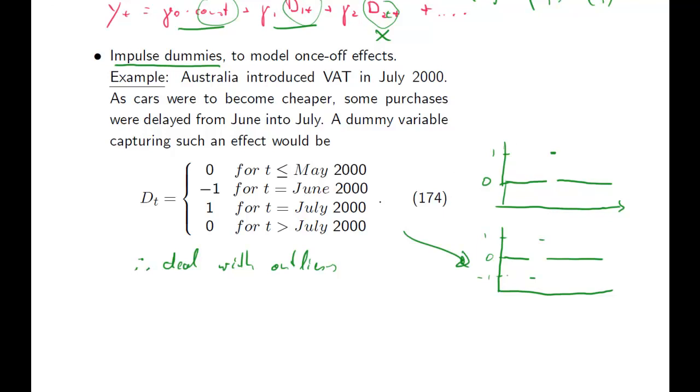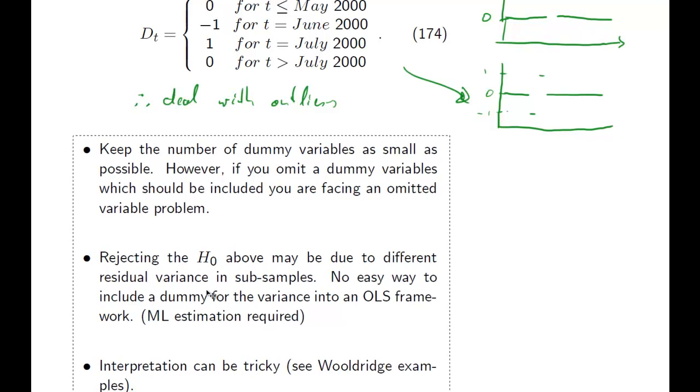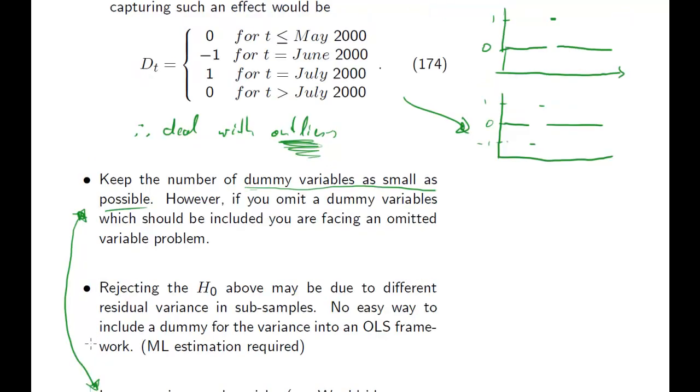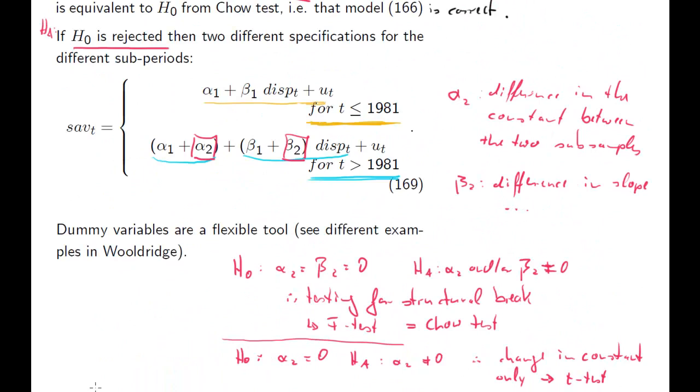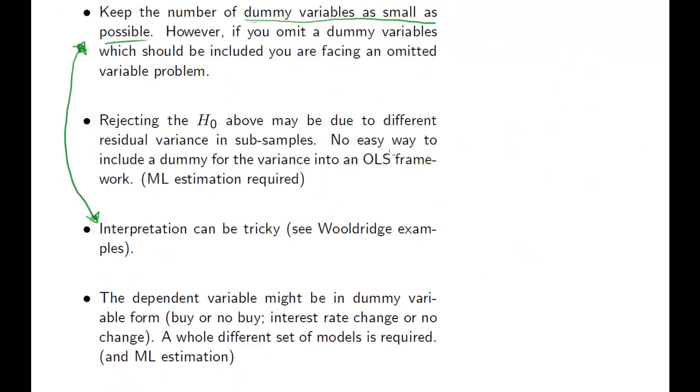The last few points with respect to dummy variables. You should really try and keep the number of dummy variables you use as small as possible. If you have outliers there may be the temptation to put a dummy variable for all outliers because you don't like certain data. You really have to be careful. If you have a lot of dummy variables, the interpretation of the coefficients to the dummy variables is actually quite difficult. We saw how we interpreted beta 2 and alpha 2 as differences in the slope and the constant between the two subsamples. If you have a lot of dummy variables, this interpretation becomes very difficult.